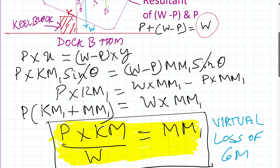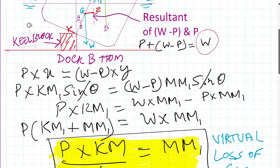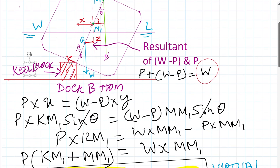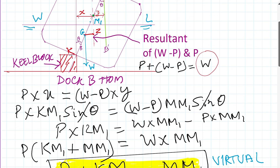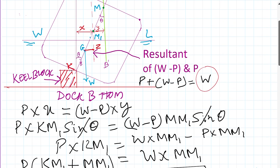So MM1 is the virtual loss of GM. Before the critical period the metacentric height was GM; now it is GM1, and MM1 is the virtual loss in GM. The formula for Method 1 is: Virtual loss of GM = P·KM/W.